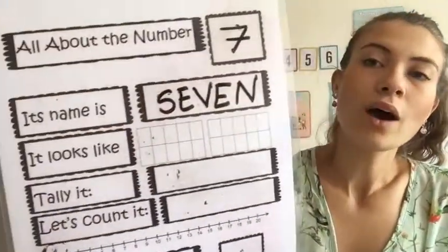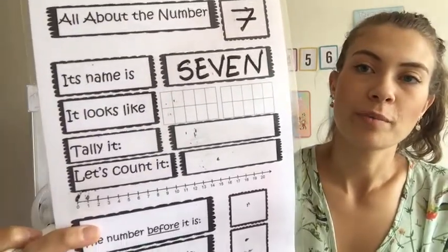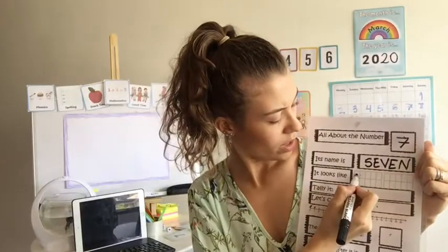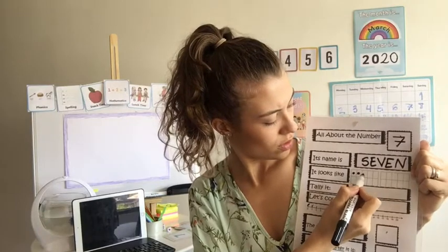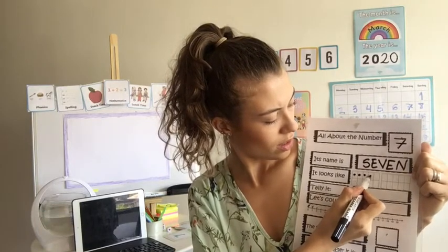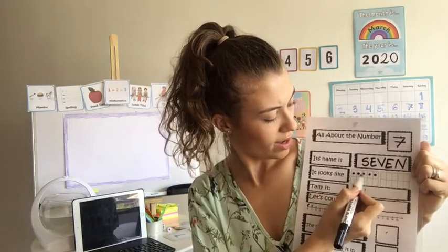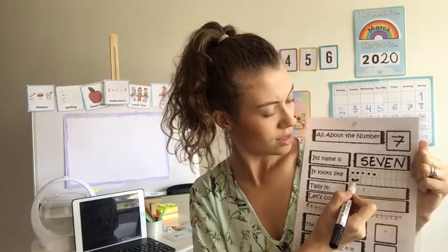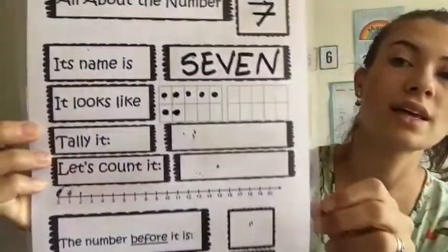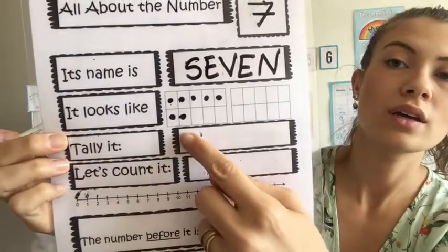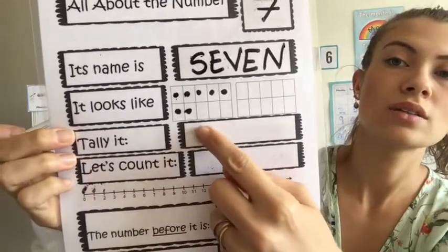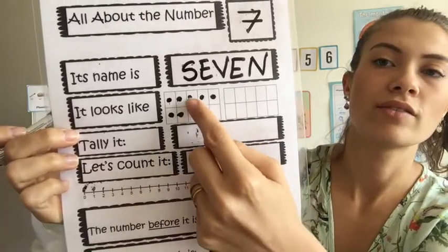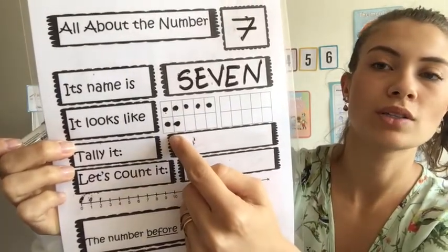And how does it look in a ten-frame? 1, 2, 3, 4, 5, 6, and 7. That's how we write it in a ten-frame — 7: 5 on the top, 2 here in the bottom.